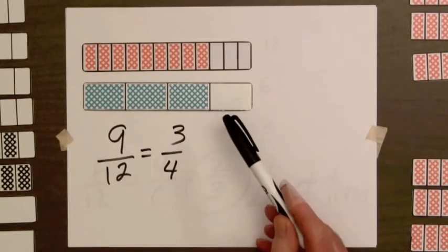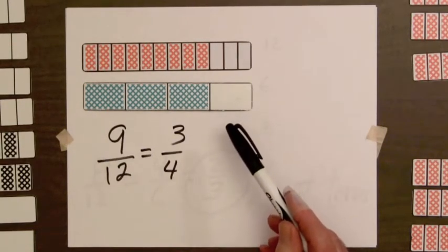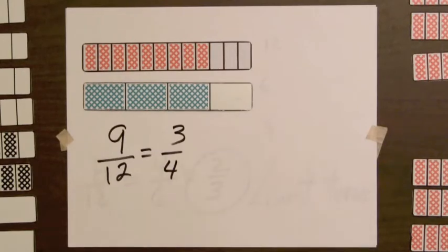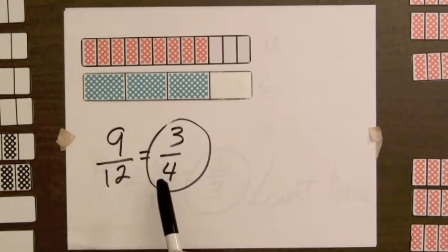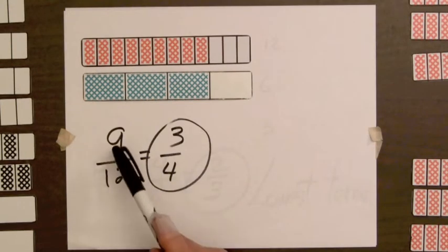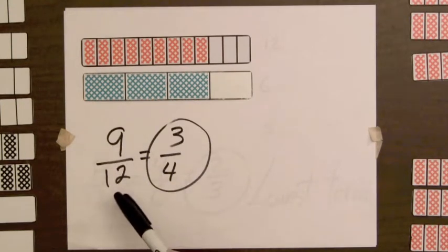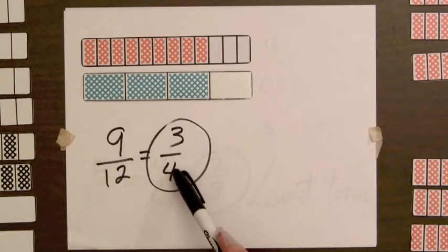Since there is no bar with a smaller number of parts that has the same amount of shading, the fraction three-fourths is in lowest terms. Notice in this equality that the numerator and denominator of nine-twelfths can both be divided by three to obtain the fraction three-fourths.